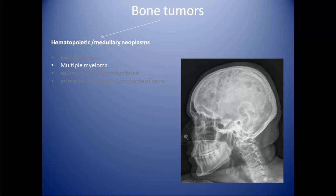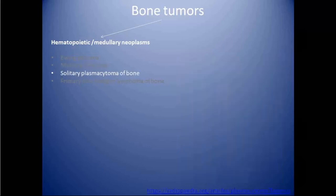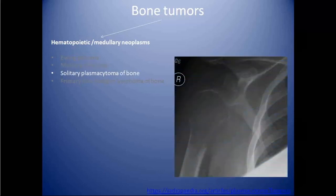Differential diagnosis of multiple myeloma includes metastasis from various primaries. Next is solitary plasmacytoma of bone, which is characterized by a single osteolytic lesion filled with proliferated plasma cells. It is differentiated from multiple myeloma in that multiple myeloma has systemic involvement, whereas in solitary plasmacytoma of bone only a particular location in the bone is involved. Solitary plasmacytoma can also be seen at extraskeletal sites in soft tissue.